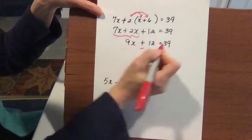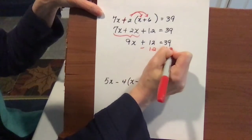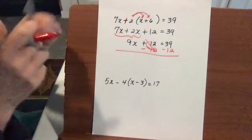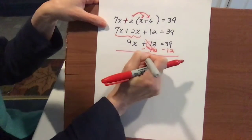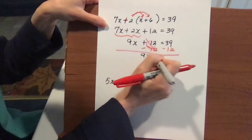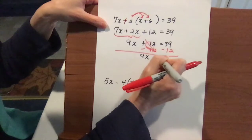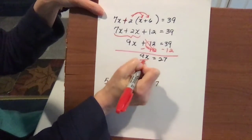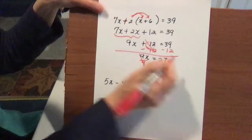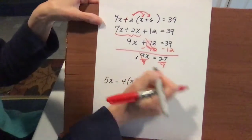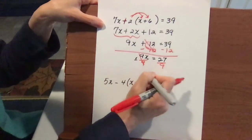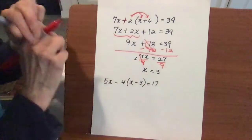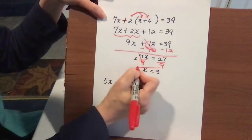Subtract 12 from both sides — bring down 9x equals 27. Divide by 9 on both sides, giving a 1 here, so x equals 27 divided by 9, which is 3. That is your answer.